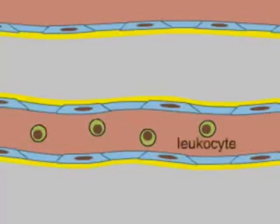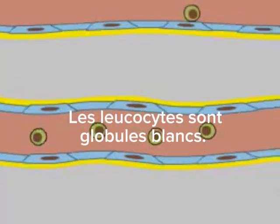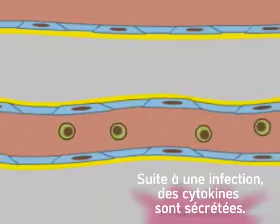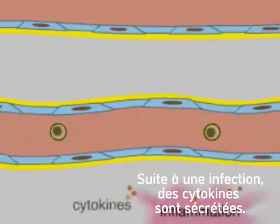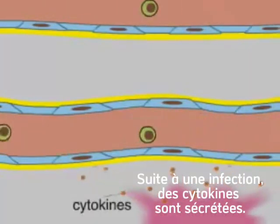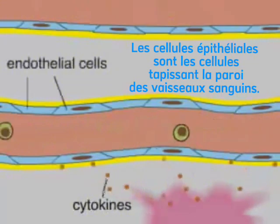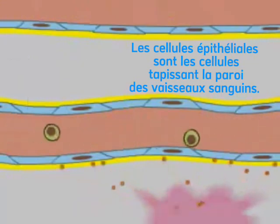Leukocytes are white blood cells that help fight infection. At sites of injury, infection, or inflammation, cytokines are released and stimulate endothelial cells that line adjacent blood vessels.